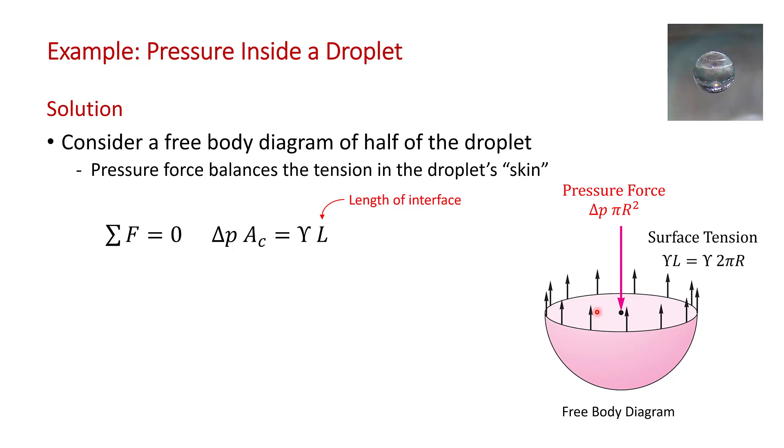Remember, surface tension is force per unit length. So to get the total force in this interface, we need to take the surface tension times the length of the interface. The length of the interface is the circumference, so it's epsilon times 2πr.